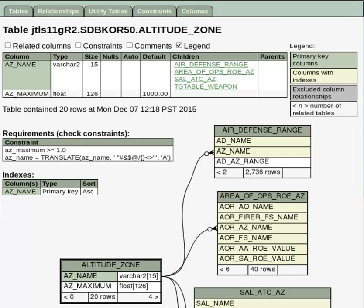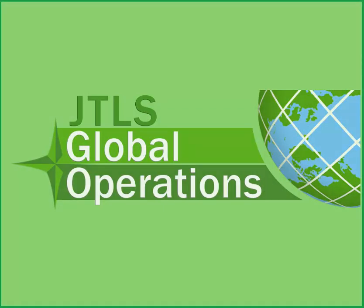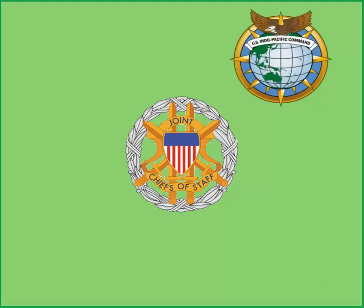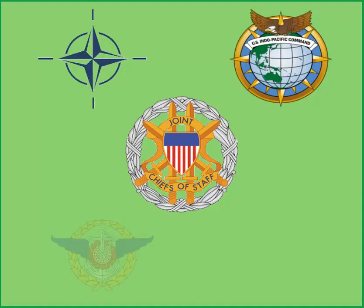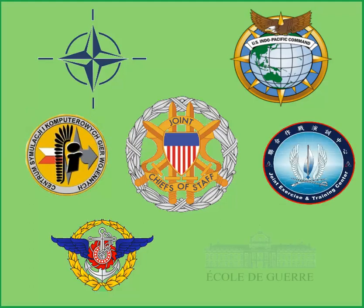JTLS-GO is a data-driven simulation system which allows the user to build their own database and scenarios according to user goals and requirements. JTLS-GO is currently in use by the United States Government and the U.S. Combatant Commands, the North Atlantic Treaty Organization, and more than a dozen other countries around the world for computer-assisted exercises, operational plan analysis, and concept analysis.